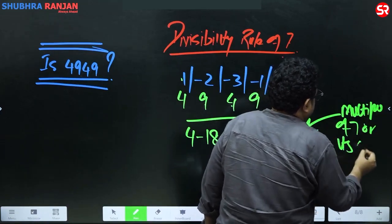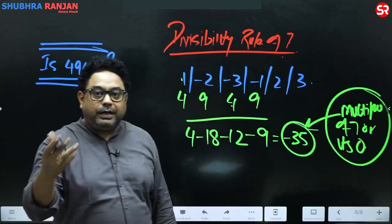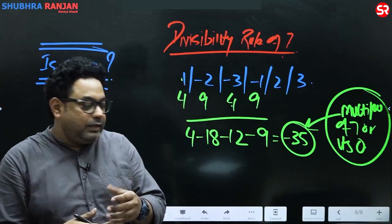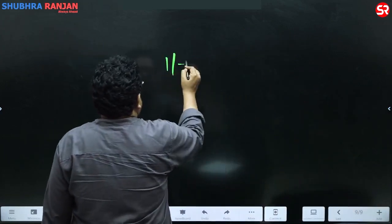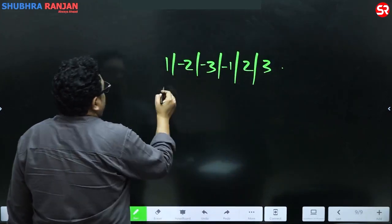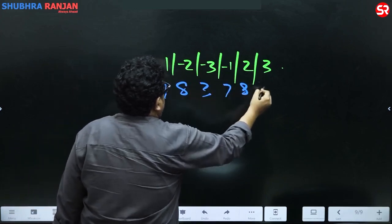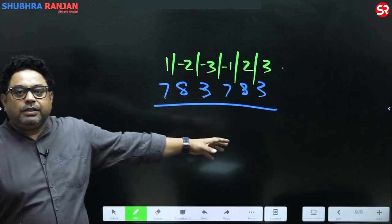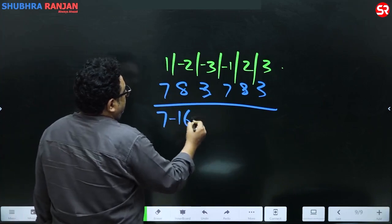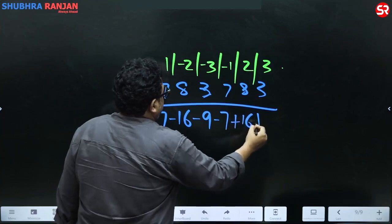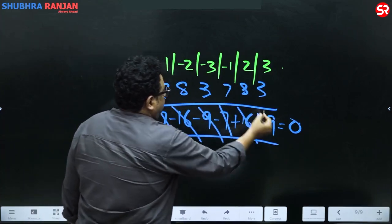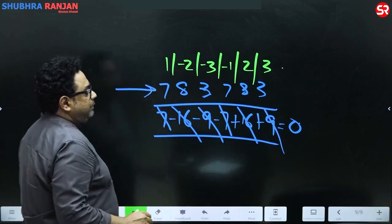What you need to remember is the series 1, -2, -3, -1, 2, 3. Let's take another example: is 783783 exactly divisible by seven? Writing it under the series from the left: 7×1=7, 8×(-2)=-16, 3×(-3)=-9, 7×(-1)=-7, 8×2=16, 3×3=9. The sum is 0 — 7 and -7, 16 and -16, 9 and -9 all cancel off. So this number is exactly divisible by 7.